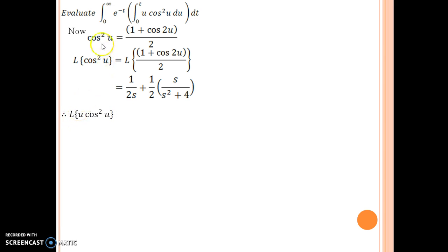Now you need to take care of multiplication of u to cos square u. When you take this care, you need to take on the right-hand side immediately the multiplication effect. The multiplication effect is going to ask you to multiply minus 1 and then take the derivative of this term.